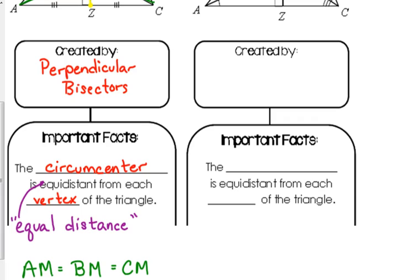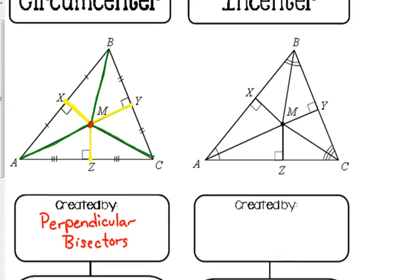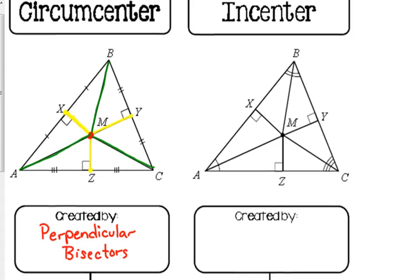Then we have what we call the incenter. The incenter is created by the angle bisectors, as you can see there on the illustration. All of those angles have been bisected, cut in half, and the intersection point of those angle bisectors is the point M, which is the incenter.